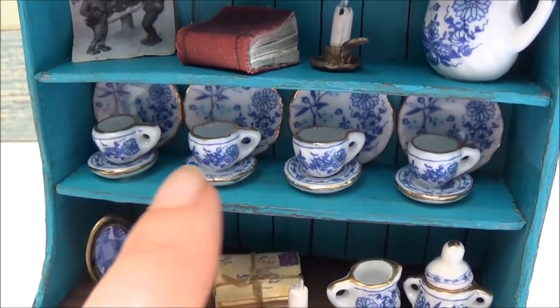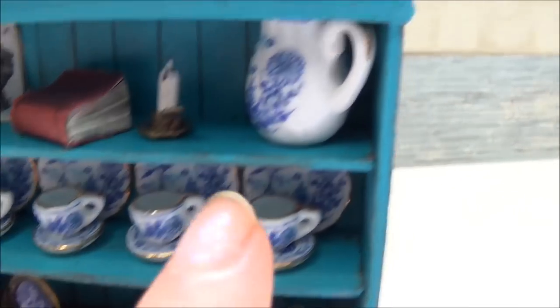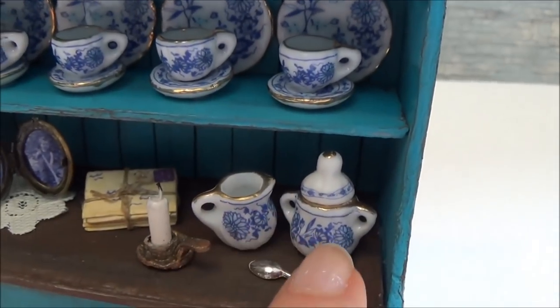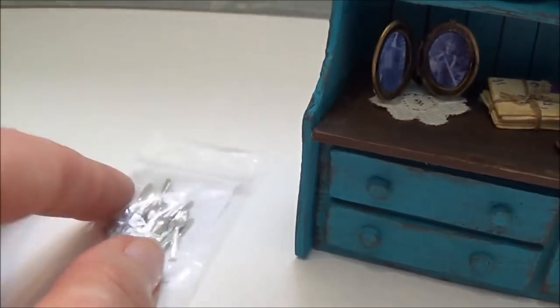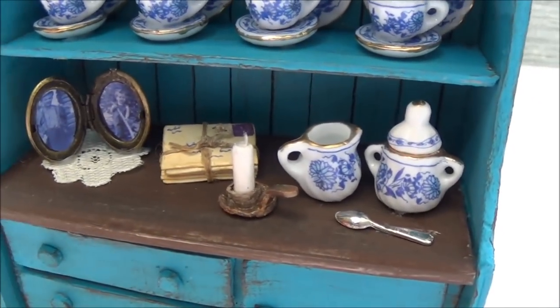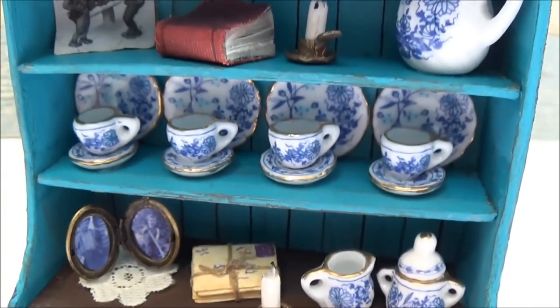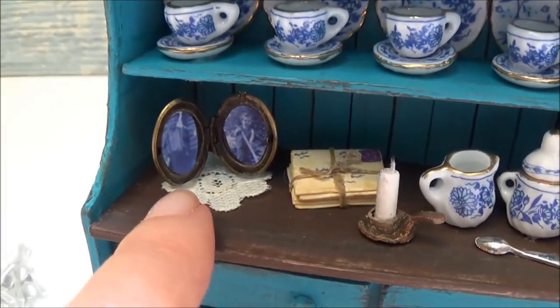So in the next clip I'm going to show you the unboxing. This one was only nine dollars with free shipping, and there's 15 pieces in the set - the cups, plates, saucers, teapot, and sugar and cream. Then I bought some silverware as well, and that was under three dollars with free shipping.